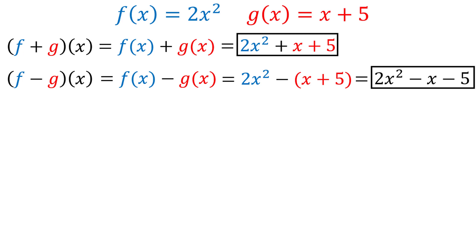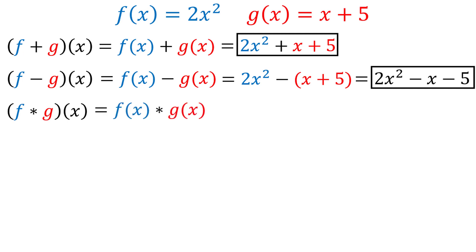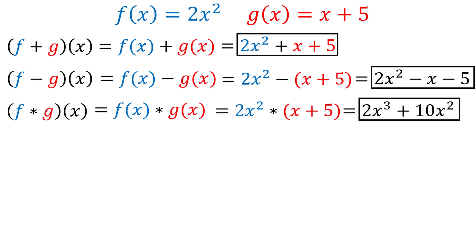We can also multiply functions, which is represented by f times g of x — the same thing as f(x) times g(x). In our example, this is equal to 2x² multiplied by (x + 5). Distributing, this simplifies to 2x³ + 10x².